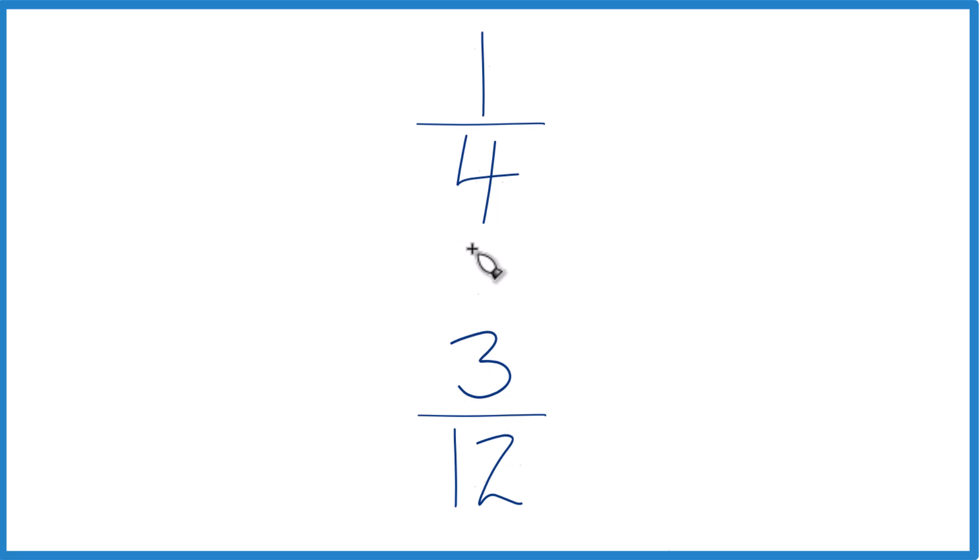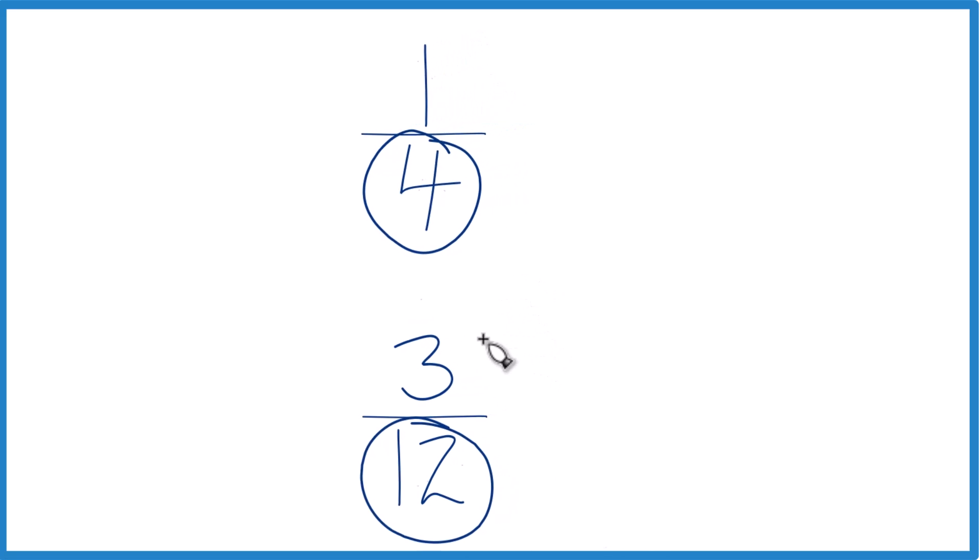We could also find a common denominator. Right now we have four and twelve, but if this was the same we could just compare the numerators. Let's do that.